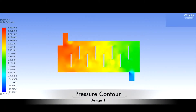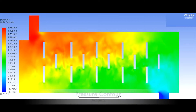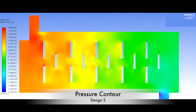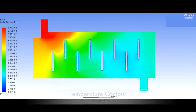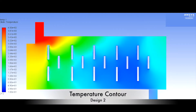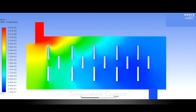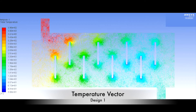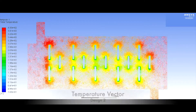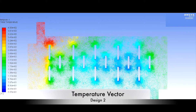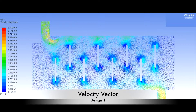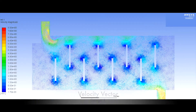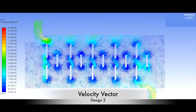After running the simulation, the results include the pressure contour for Design 1 and the pressure contour for Design 2, the temperature contour for Design 1 and the temperature contour for Design 2, the pressure vector for Design 1, the temperature vector for Design 2, the velocity vector for Design 1, and the velocity vector for Design 2.